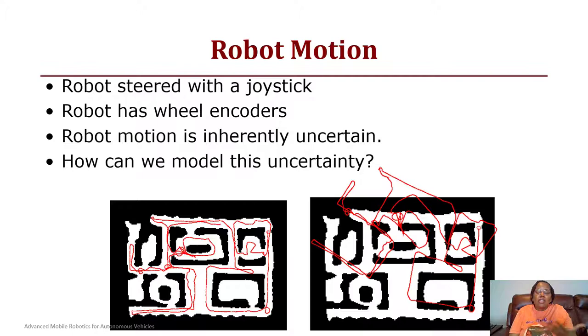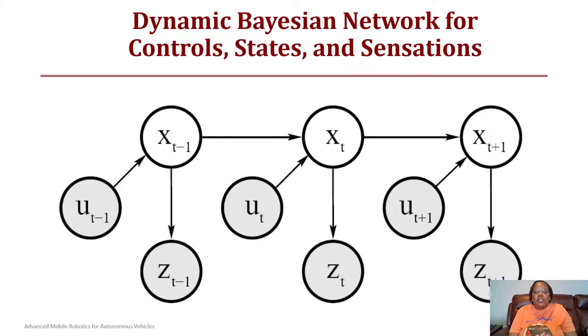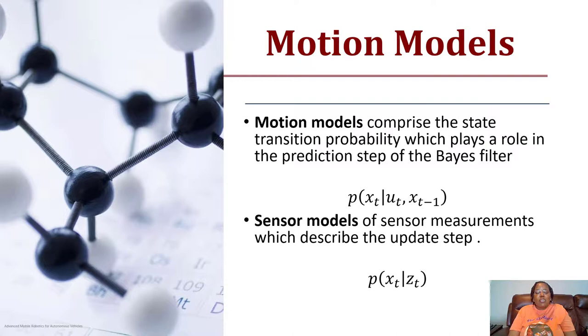The dynamic Bayesian network for control states and sensations is given by: if the robot is at a state x of t minus one, you give an input control at u_t minus one, and then you take a measurement z_t minus one. Then the robot moves to the next state, so for every state we have a control input u and a measurement z. This creates that motion model and measurement that we use for finding the belief of where the robot feels its current state is or the state of the world.